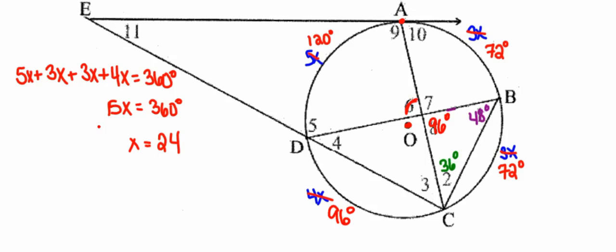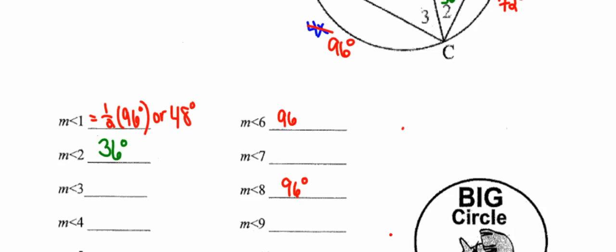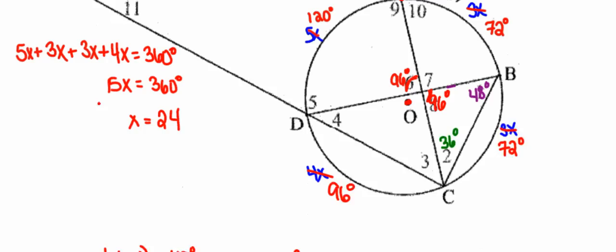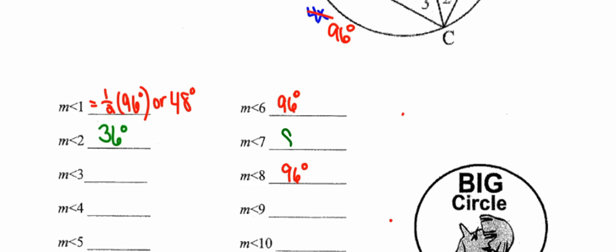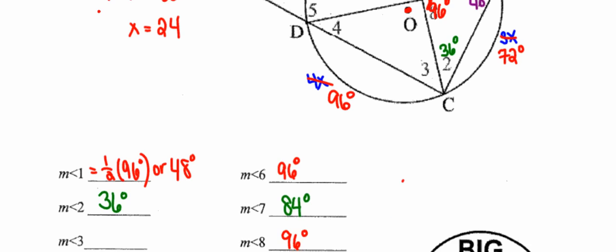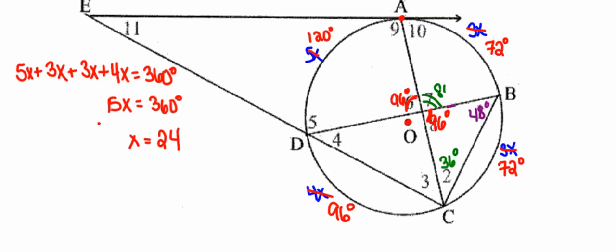Looking at the picture, angles 6 and 8 are vertical angles, so they must have congruent measures. Angle 6 is therefore also 96 degrees. I'll label that in the picture. Then angle 7 is supplementary to angle 6 — together they form a straight line summing to 180 degrees. Subtracting 96 from 180, the measure of angle 7 is 84 degrees. It's just one little piece of the puzzle after the next.